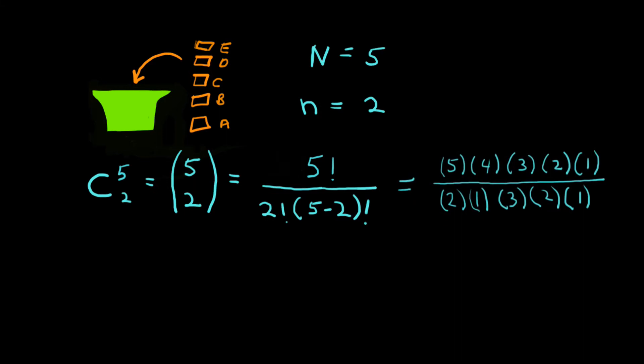That is five times four times three times two times one is five factorial. Two factorial is two times one. Five minus two is three, so that's three times two times one, three factorial. And so now doing the calculations, we get a hundred and twenty divided by twelve, or ten. So there are ten possible outcomes of taking two out of five.